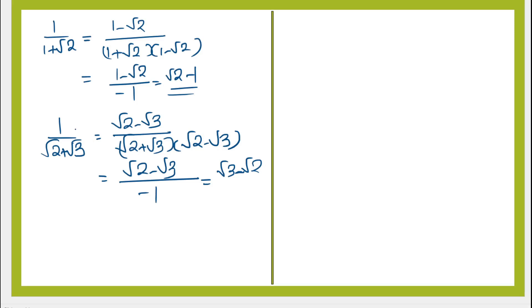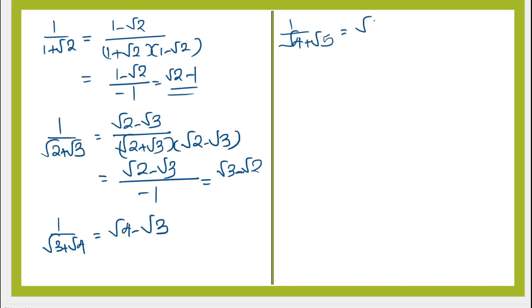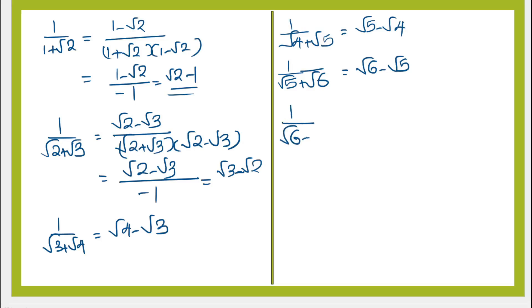Similarly we can rewrite the next terms also. 1 by root 3 plus root 4 is root 4 minus root 3. 1 by root 4 plus root 5 is root 5 minus root 4. 1 by root 5 plus root 6 is root 6 minus root 5. 1 by root 6 plus root 7 is root 7 minus root 6.